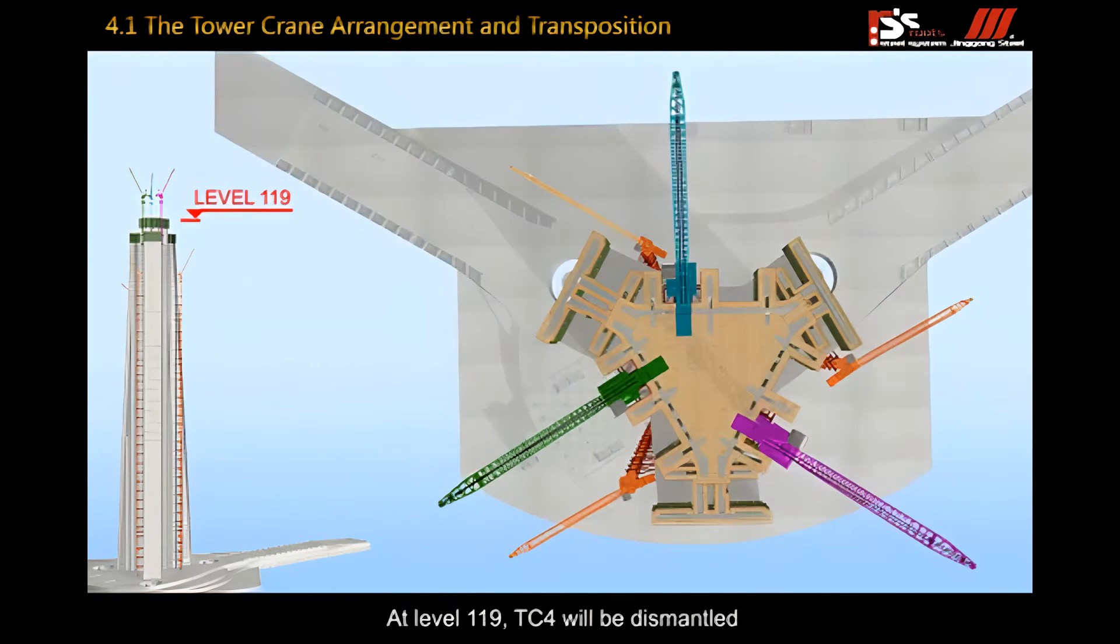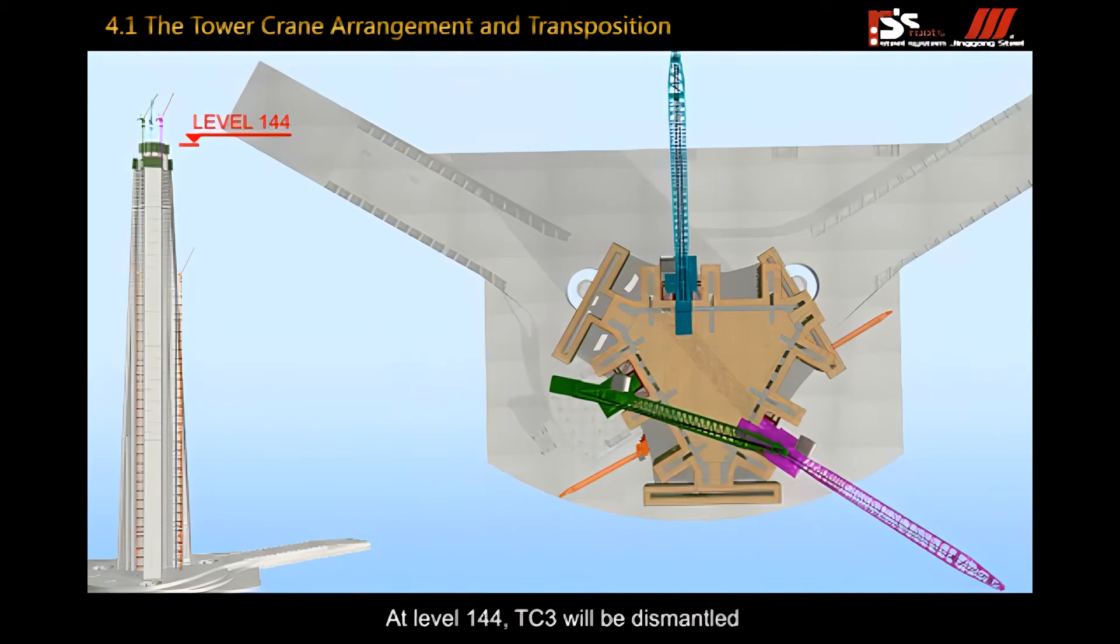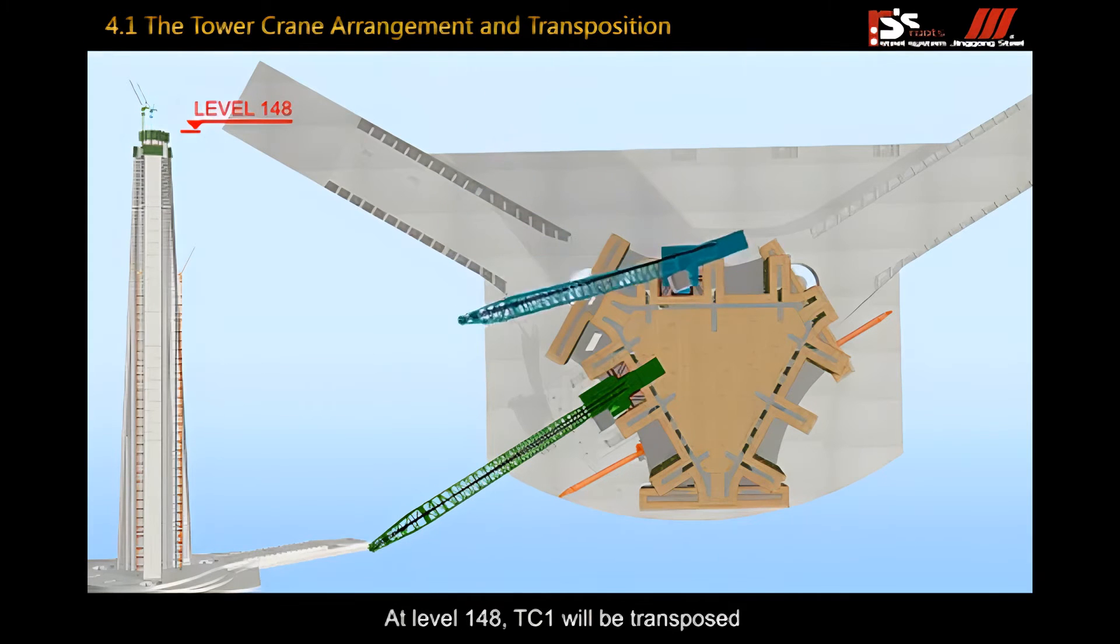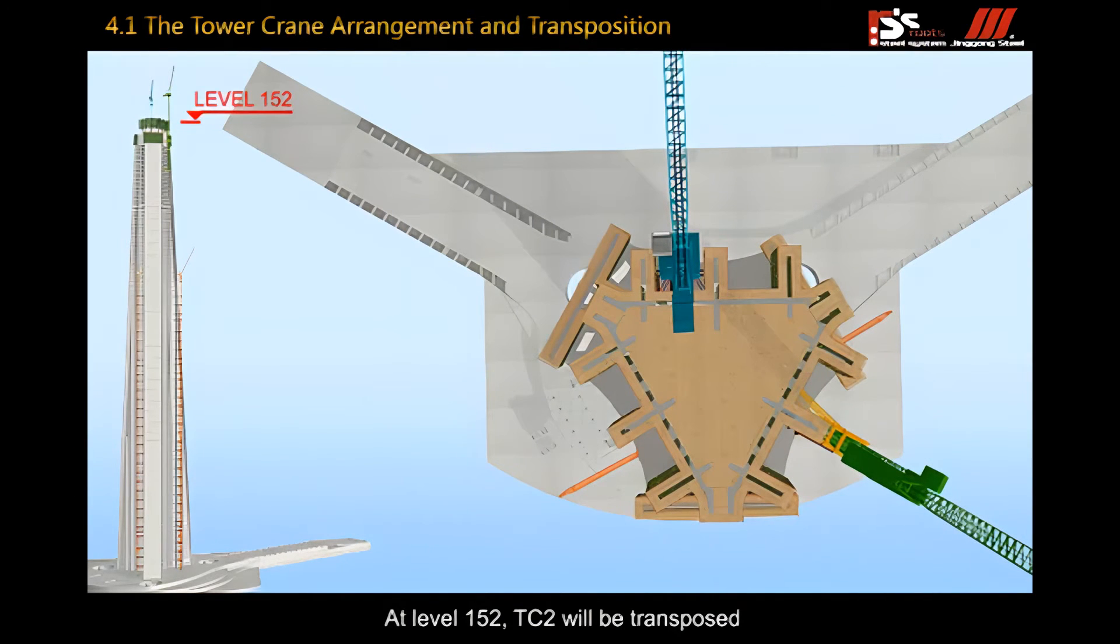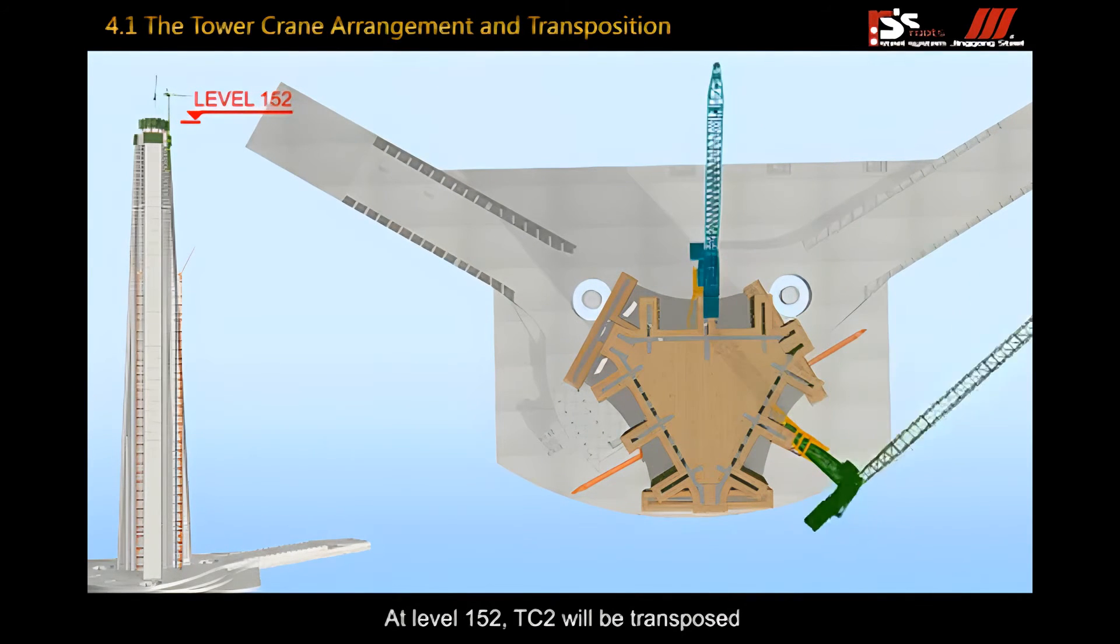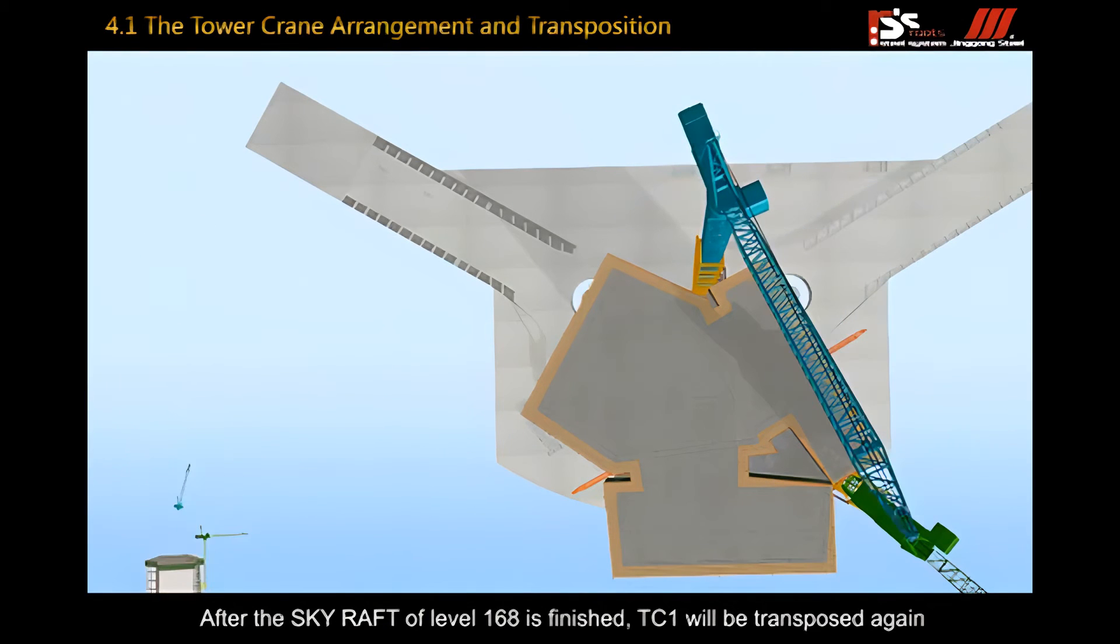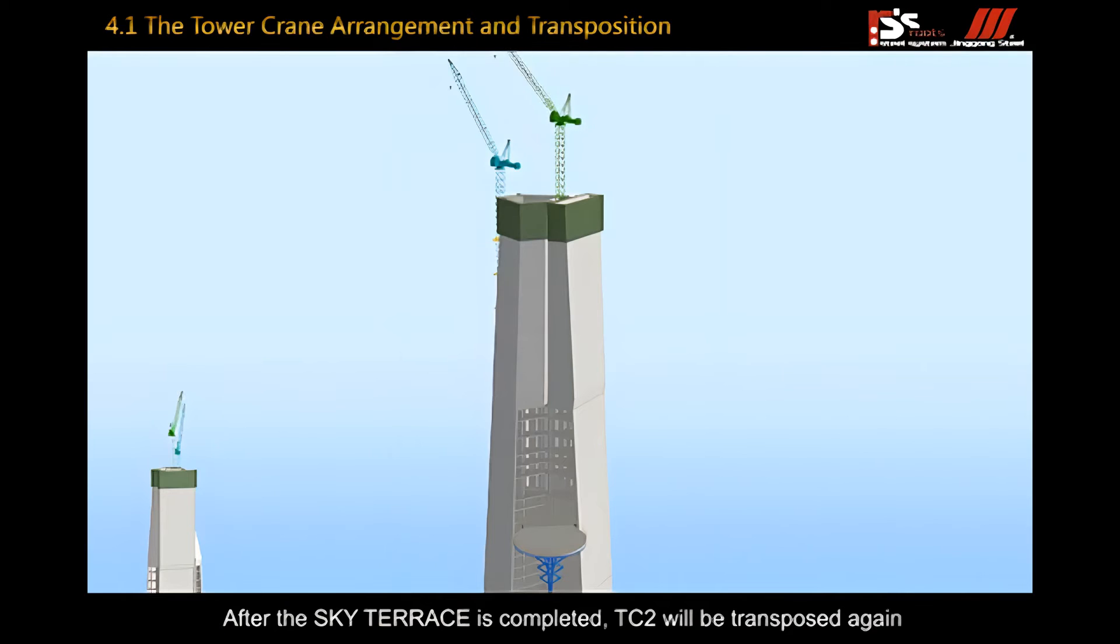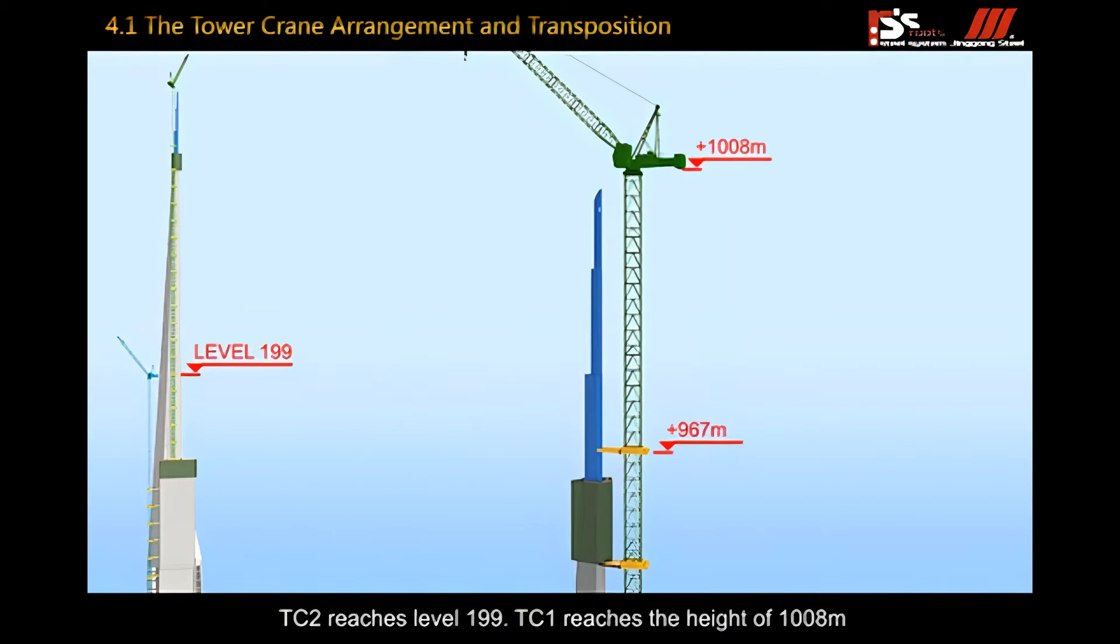At level 119, TC4 will be dismantled. At level 144, TC3 will be dismantled. At level 148, TC1 will be transposed. At level 152, TC2 will be transposed. After the sky raft of level 168 is finished, TC1 will be transposed again. After the sky terrace is completed, TC2 will be transposed again. TC2 reaches level 199, TC1 reaches the height of 1008 meters.